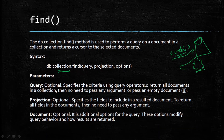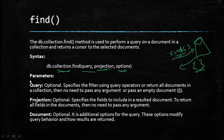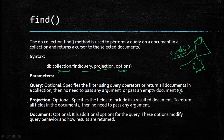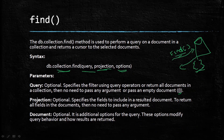The syntax of the find method is: db dot collection name, then the find method. The find method accepts three parameters: the first is query, then projection, and the last is options. All these parameters are optional. The query parameter specifies the filter in the query operation, or returns all documents in the collection if no argument is passed. The projection parameter specifies the fields to include in the result. The options parameter provides additional options that modify the query behavior and how results are returned.